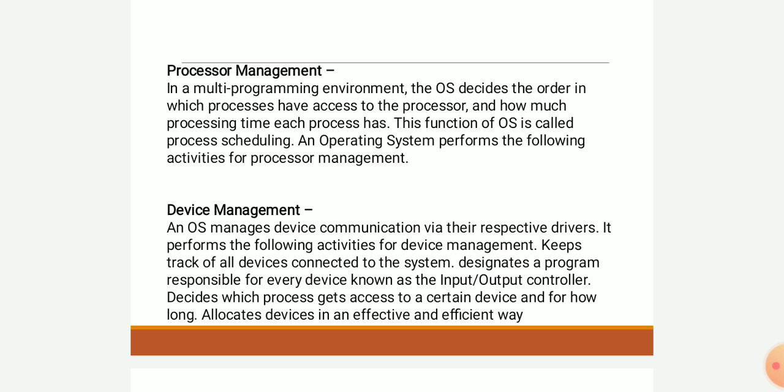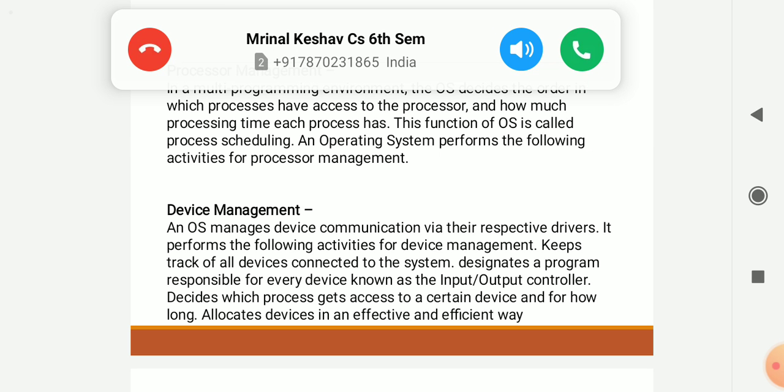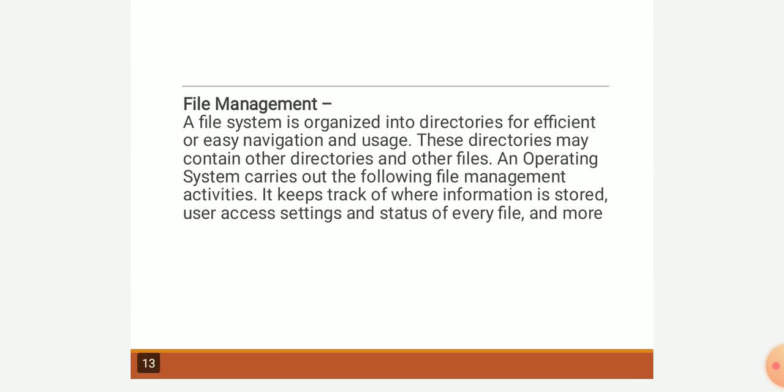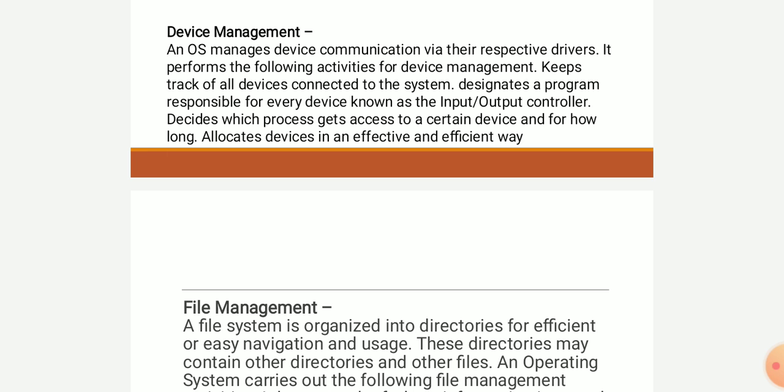Device management: the OS manages device communication via their respective drivers. It keeps track of all devices connected to the system, designates a program (I/O controller) responsible for every device, decides which process gets access to a device and for how long, and allocates devices efficiently. File management: the file system is organized into directories for easy navigation, which may contain other directories and files. The OS keeps track of where information is stored, user access settings, and the status of every file.